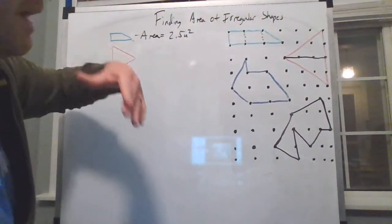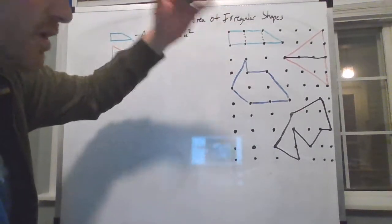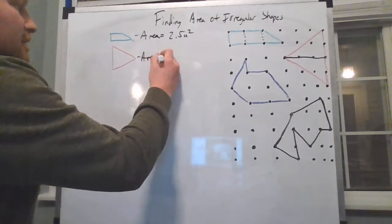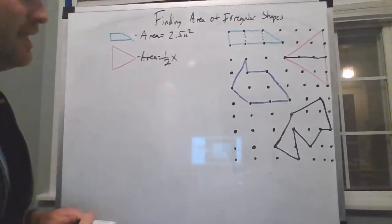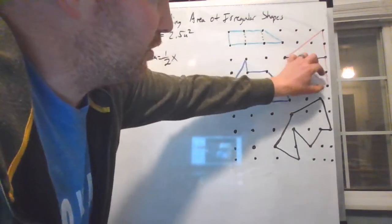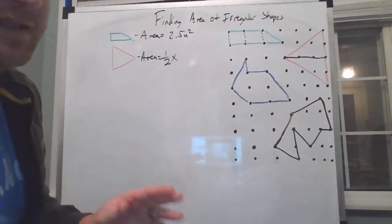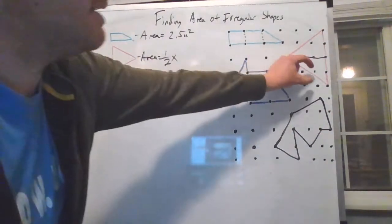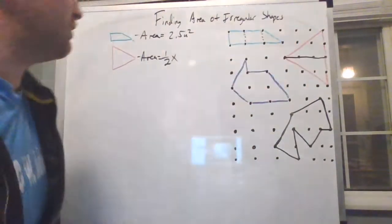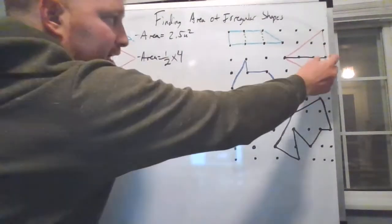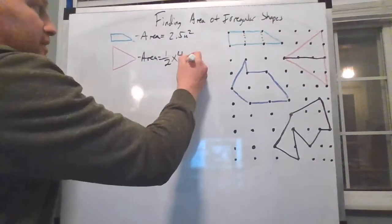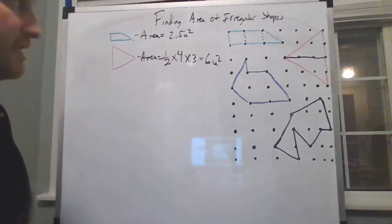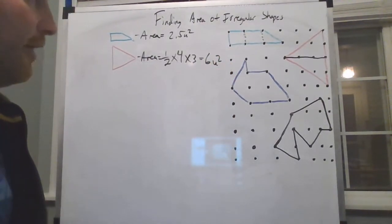My base is here and my height is here, because the height and base of every single polygon is always going to be where there's a 90-degree angle. The area of the triangle is one half times the base. The base is — listen, every year I've been teaching this, the same mistakes happen — don't count dots, count segments: one segment, two segment, three segment, four segment. And our height is one, two, three. So half times four is two, two times three is six. Our triangle is exactly six units squared in area.